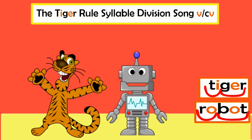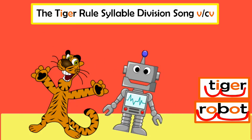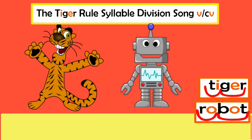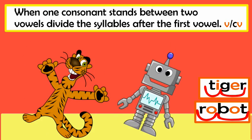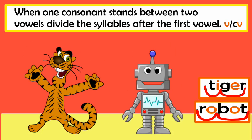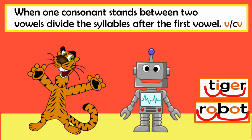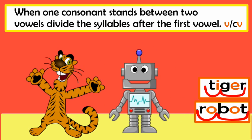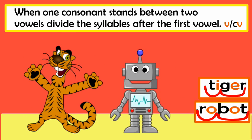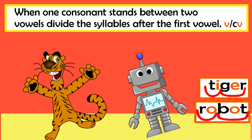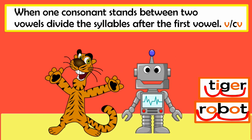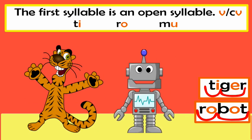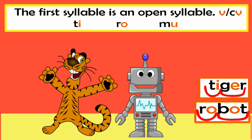Tiger rule, syllable division with the tiger rule. When one consonant stands between two vowels, divide the syllables after the first vowel. The first syllable is an open syllable.